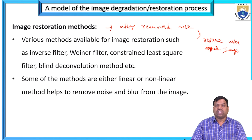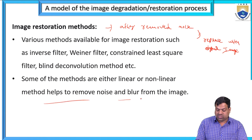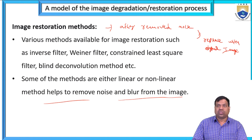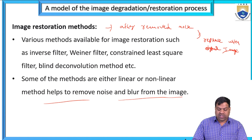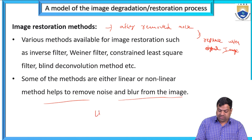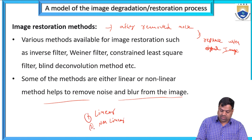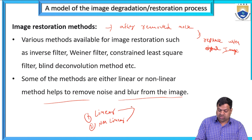There are various methods available for image restoration such as inverse filtering, WNR filtering, constrained least square filtering, and blind deconvolution method. Some of these methods are either linear or non-linear and help to remove noise and blurring of the image. These image restoration methods remove noise and replace it with the original.